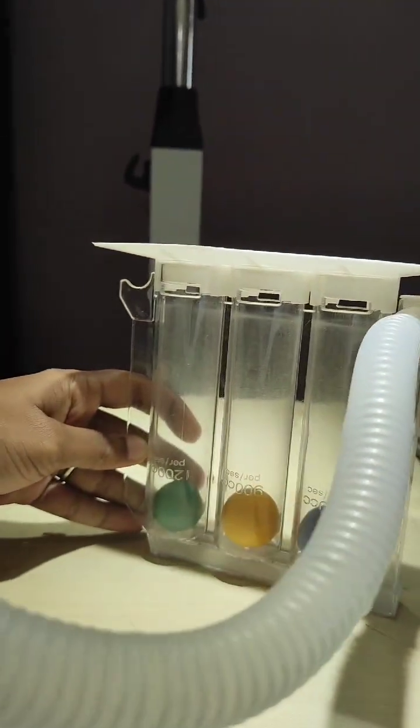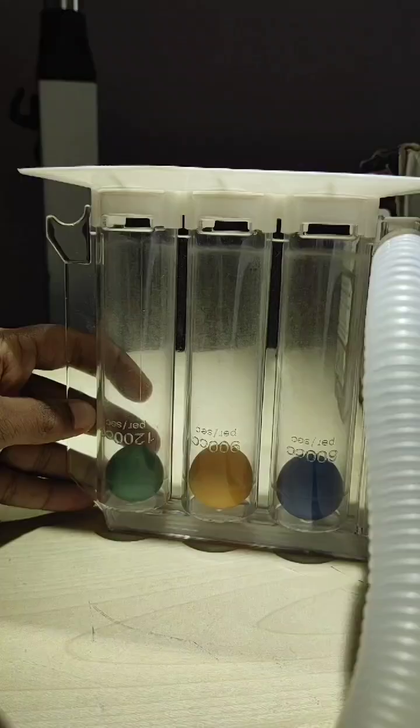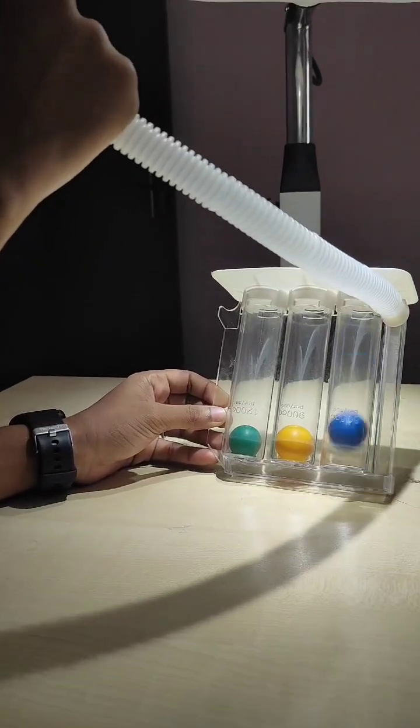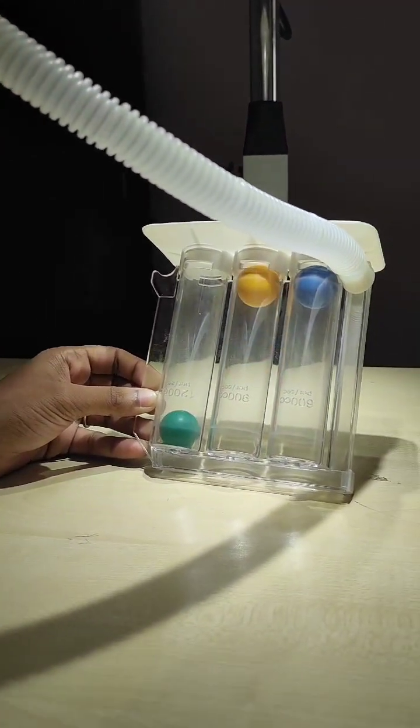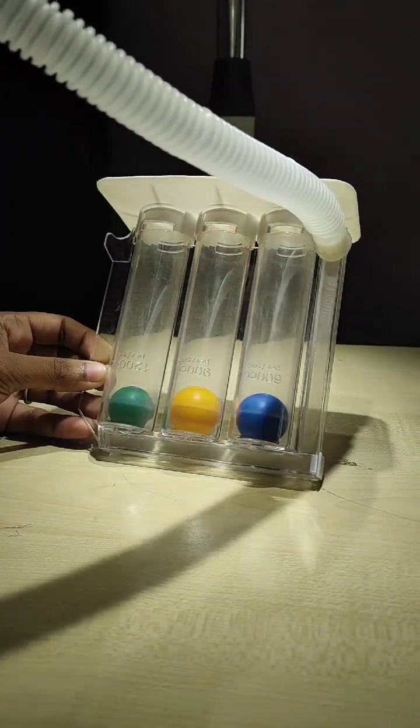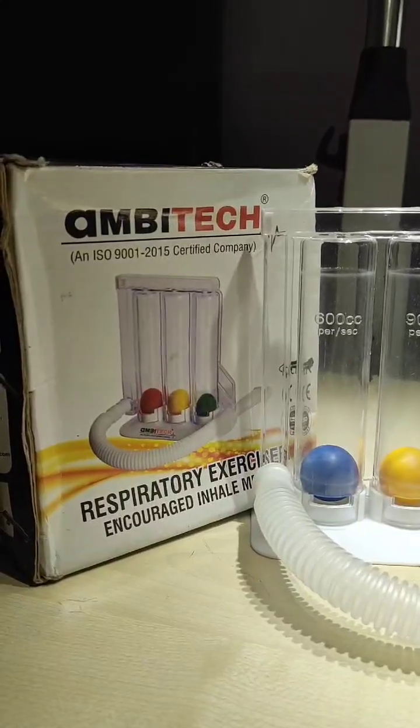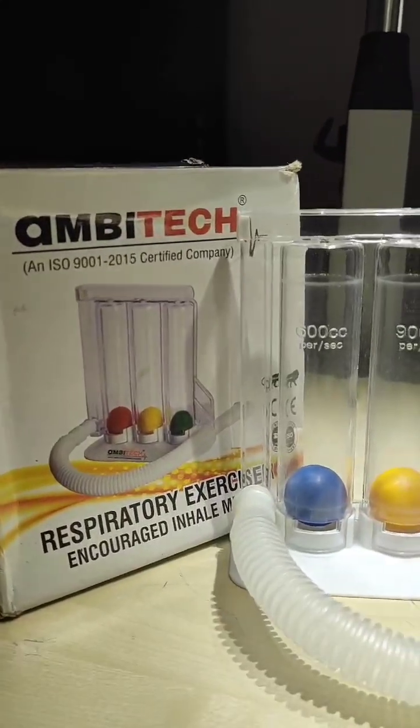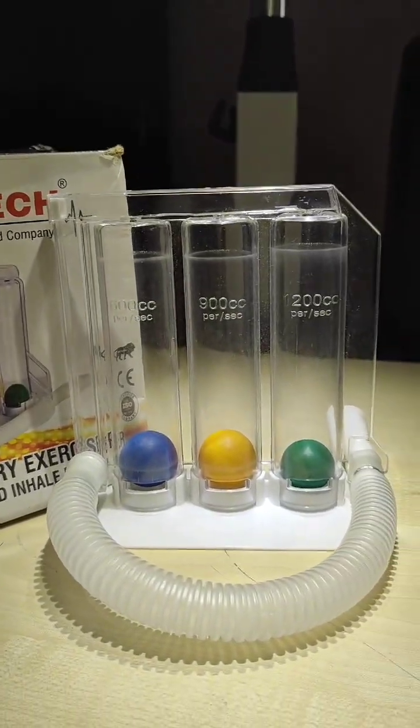For exhalation, turn the device downwards. This position uses gravity to control resistance, making your exhalation muscles work harder and improving your overall respiratory strength. A healthy adult achieves 2500 to 3000 ml.